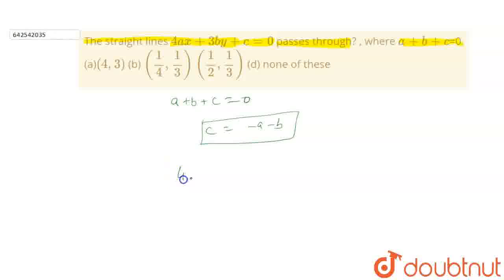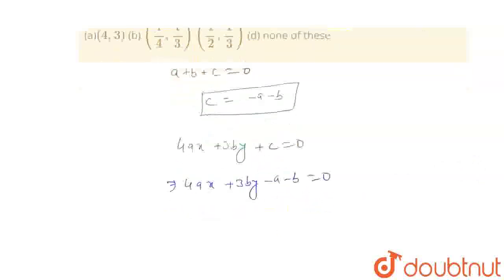And we have also given 4ax plus 3by plus c is equal to 0. If you put the value of c from here to here, 4ax plus 3by plus c will be minus a minus b is equal to 0.